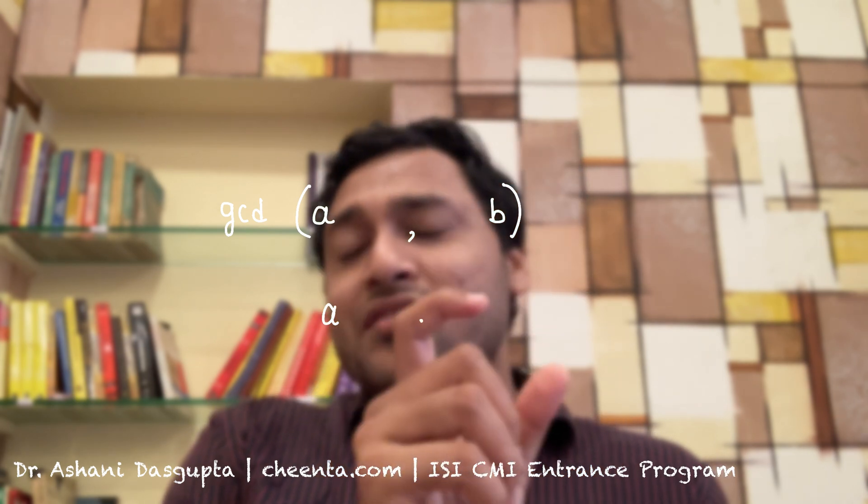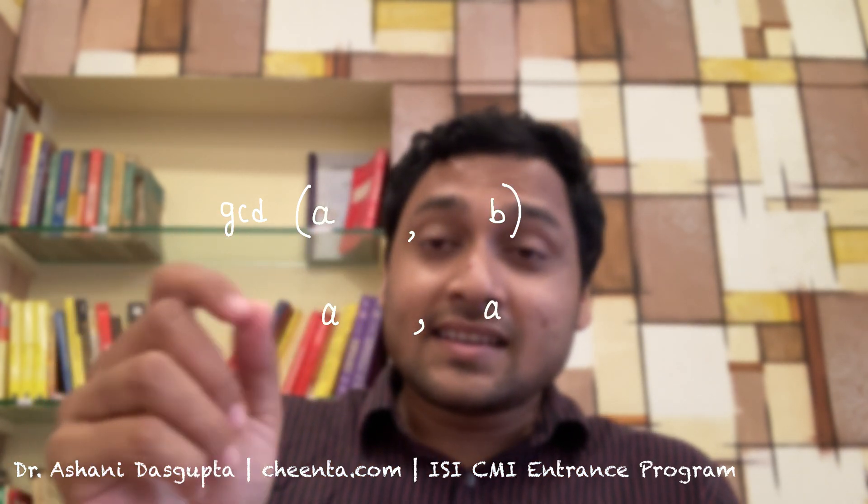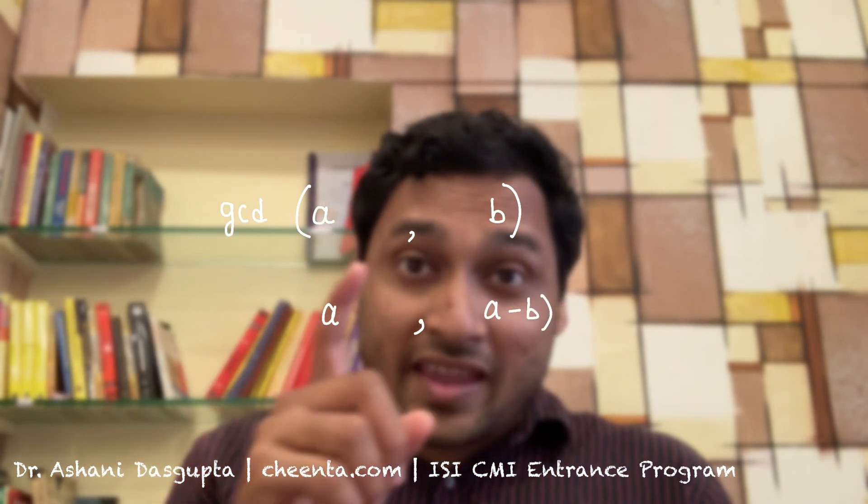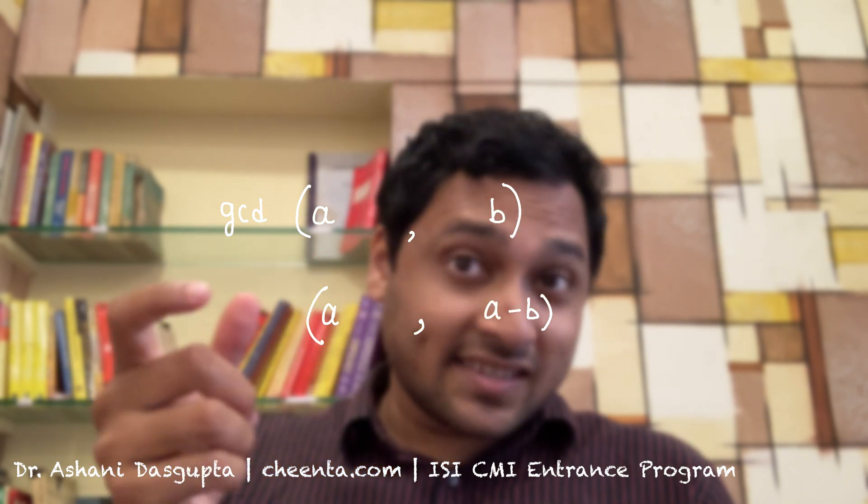Suppose you want to find out the GCD of two numbers, A and B. About 2000 years ago, the Greek mathematician Euclid found a very simple but surprising fact: GCD of A and B is the same as GCD of A and A-B.